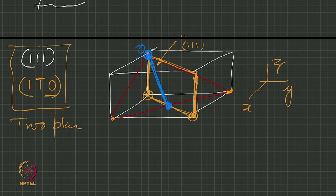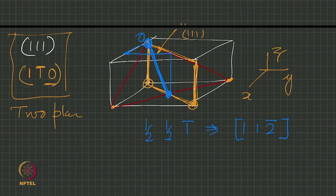Then we just indexed it by choosing the origin here. We index it half along x half along y and minus 1 along z half minus 1 which we said by multiplying by 2 the direction was 1 1 2 bar. You can use Weiss zone law to verify your result. If this direction is the line of intersection, it should be lying on both the planes. It should lie on 1 1 1 as well as it should lie on 1 bar 1 0 and you can quickly see that that is true because 1 into 1 plus 1 into 1 plus 1 into minus 2 is equal to 0.